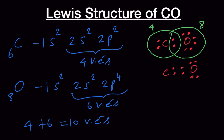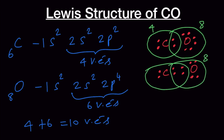Oxygen now has two lone pairs and one lone pair here. Checking the octet configuration: oxygen has 8 electrons, but carbon has only 6. We still need 2 more electrons around carbon so that it can satisfy the octet configuration. Therefore, let's bring one more lone pair to the bond pair.